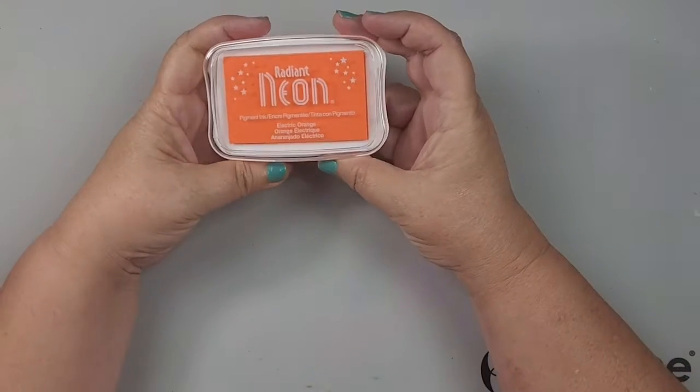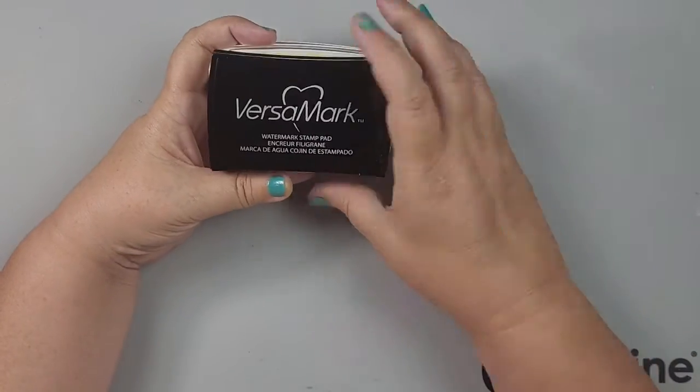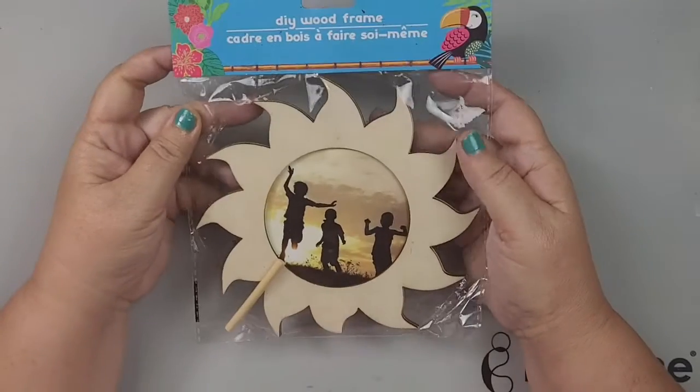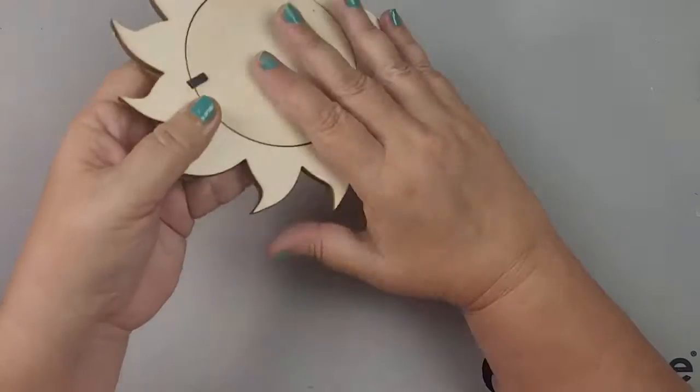I'm going to be using Fireworks in Dandelion, Electric Orange Radiant Neon as well as Electric Yellow, Versamark and clear embossing powder. I have a DIY frame from Dollar Tree and a set of Connect Mini Alphabet dies from MFT.